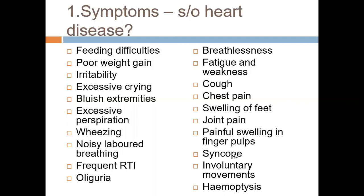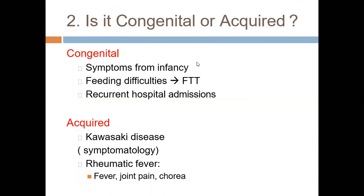Syncope, as in hypertrophic cardiomyopathy, AS, PS, or any obstructive lesion including MS and TS. Involuntary movement as in rheumatic cardiac cases — neurology plus cardiac involvement. Hemoptysis as in pulmonary hypertension, mitral stenosis (congenital or acquired), and ASOS. All these findings should be very carefully evaluated when taking a history of congenital heart patients.